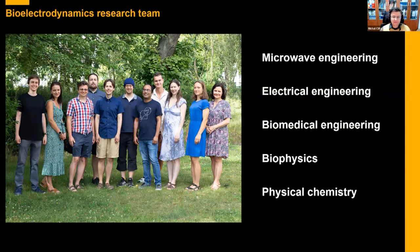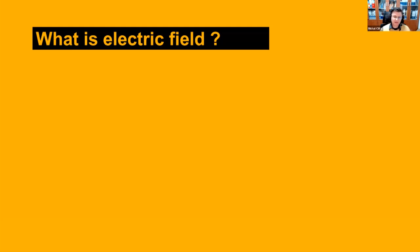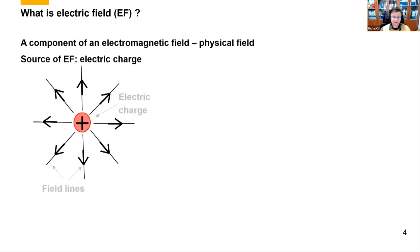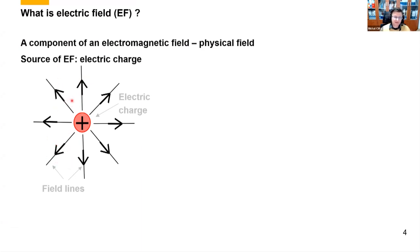Let's start with a definition for those who might not be deeply into physics. What is an electric field? Basically, it's a component of a physical field — specifically the electromagnetic field — and one of its components is the electric one. This field is generated by anything that carries an electric charge. We often visualize it by field lines. Because the electric field can exert a directional force, we show arrows, and the denser the arrows, the higher the electric field strength.